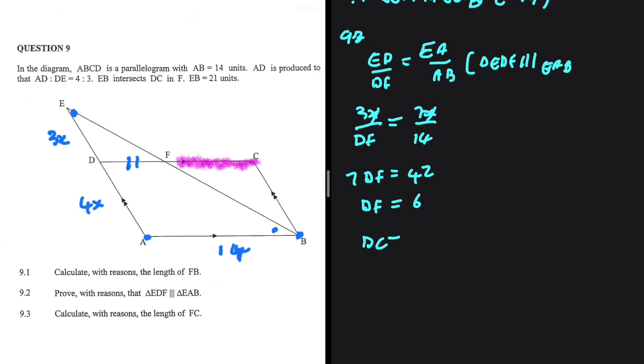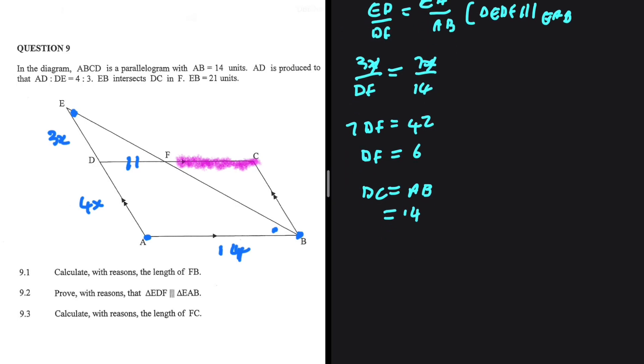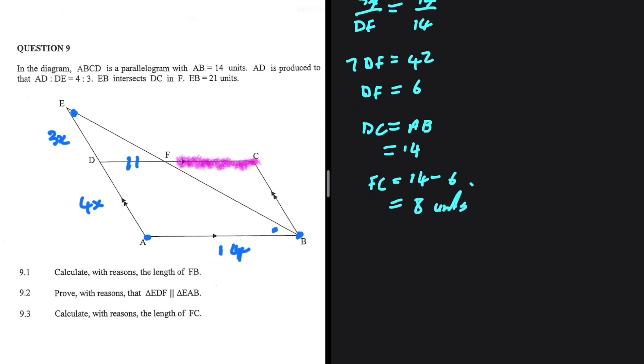But we know that DC is equal to AB, which is equal to 14, because ABCD is a parallelogram. So FC will be equal to 14 minus 6, which is equal to 8. 14 minus 6 is 8. So FC is 8 units. And just like that, we have the length of FC.